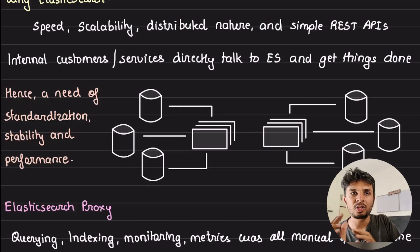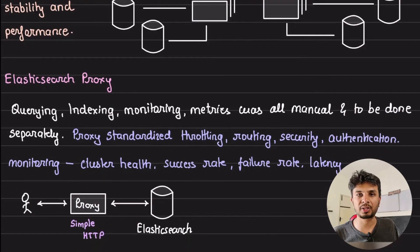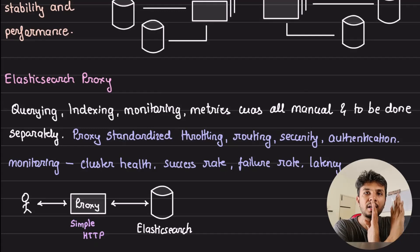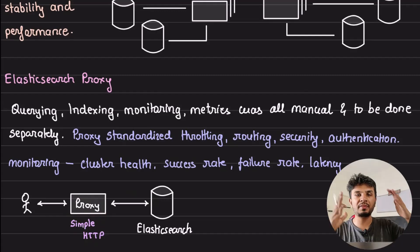This is where the first tooling that Twitter built is an Elasticsearch proxy. Now this proxy sits between the client and the Elasticsearch cluster. So whoever wants to talk to this Elasticsearch cluster cannot talk to this Elasticsearch cluster directly but has to go through a proxy. Now this proxy is a very simple HTTP client but because it is a simple HTTP client it can piggyback a lot of stuff.